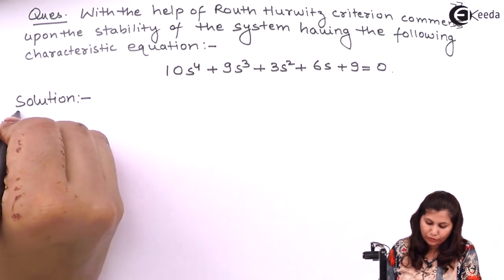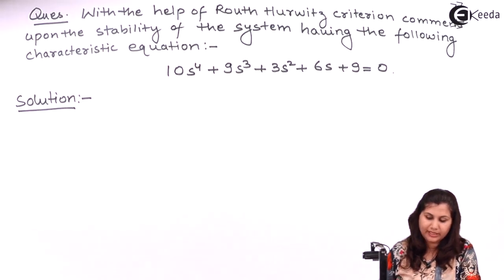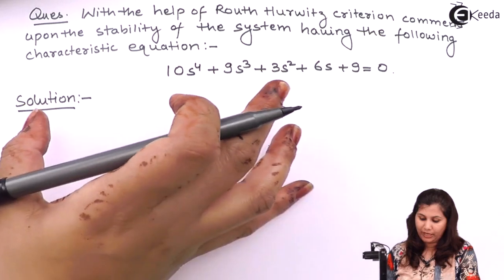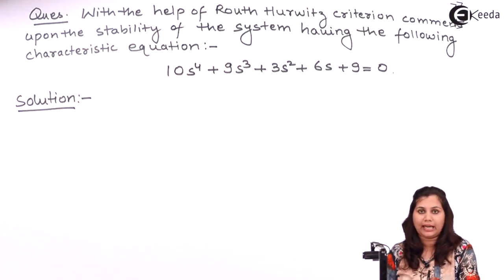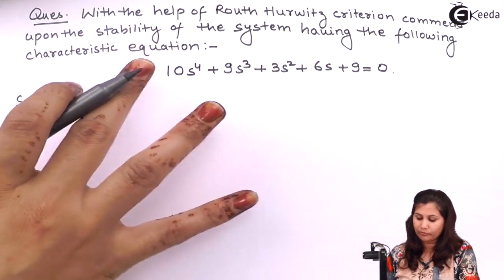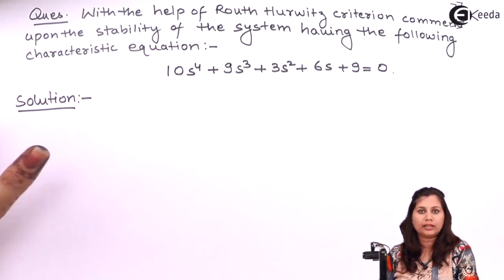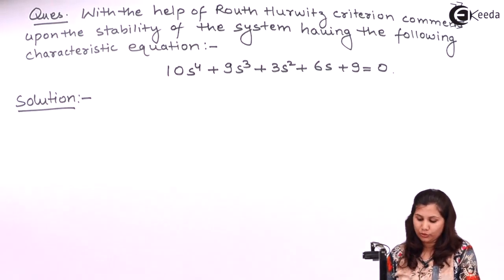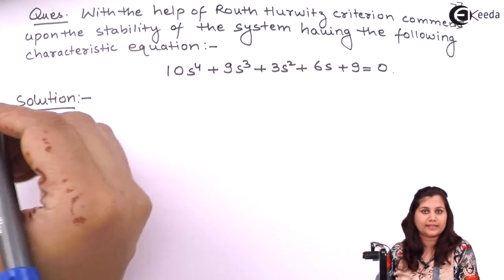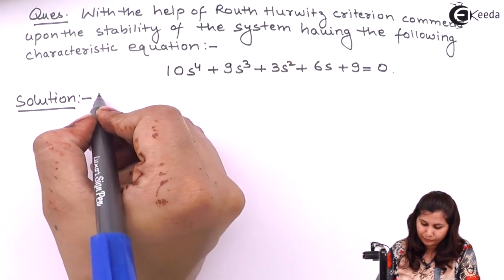For Routh-Hurwitz criteria, the first step is to determine the characteristic equation, which is given to us in the question. The second step is to form the Routh array. So let's find the Routh array for this system.